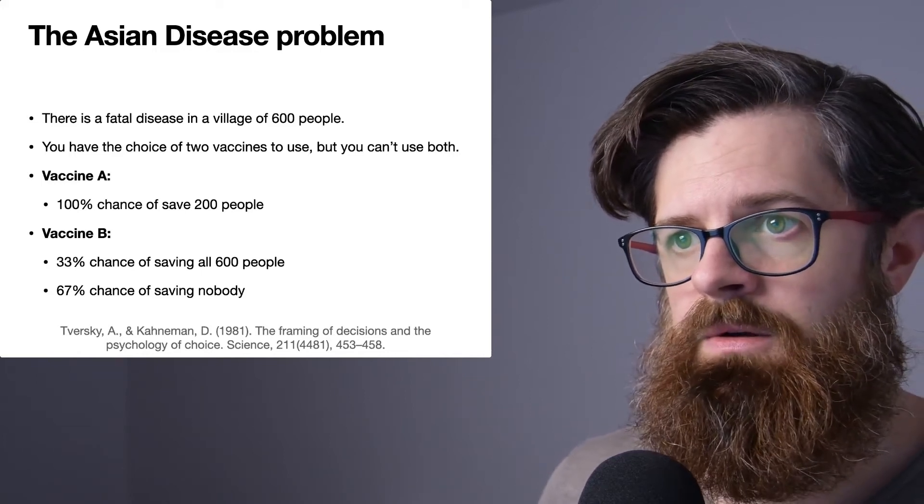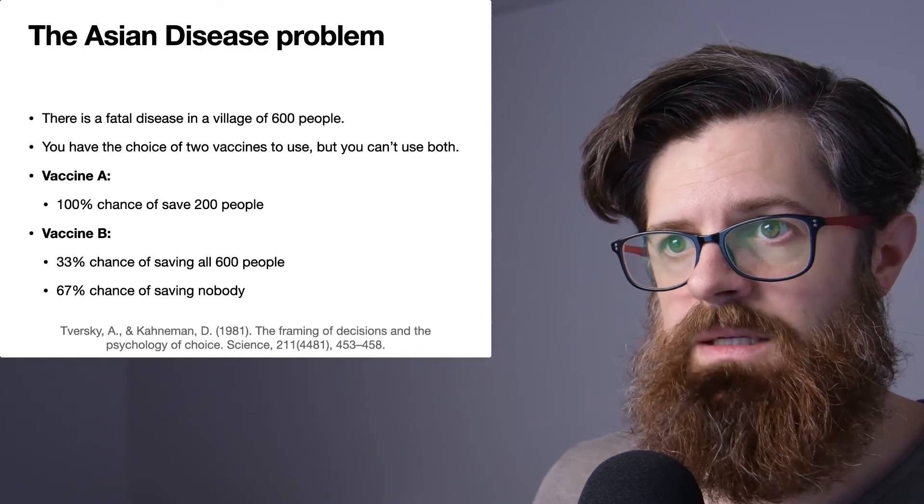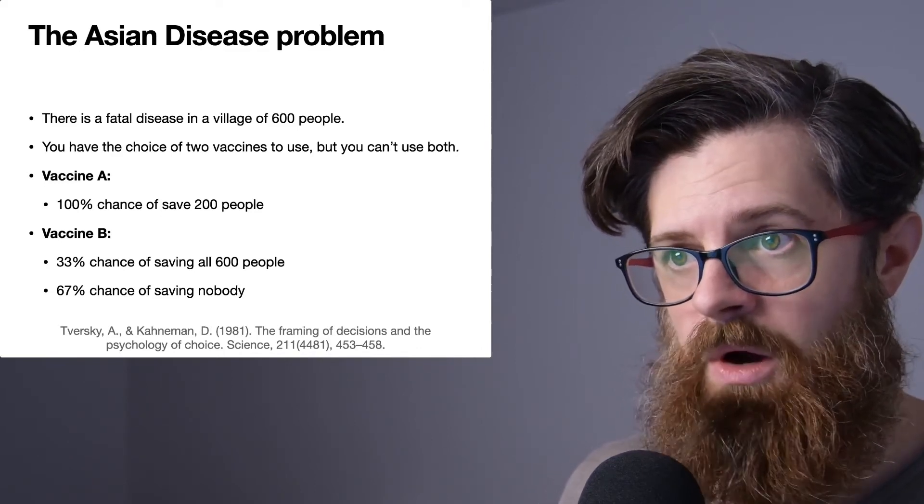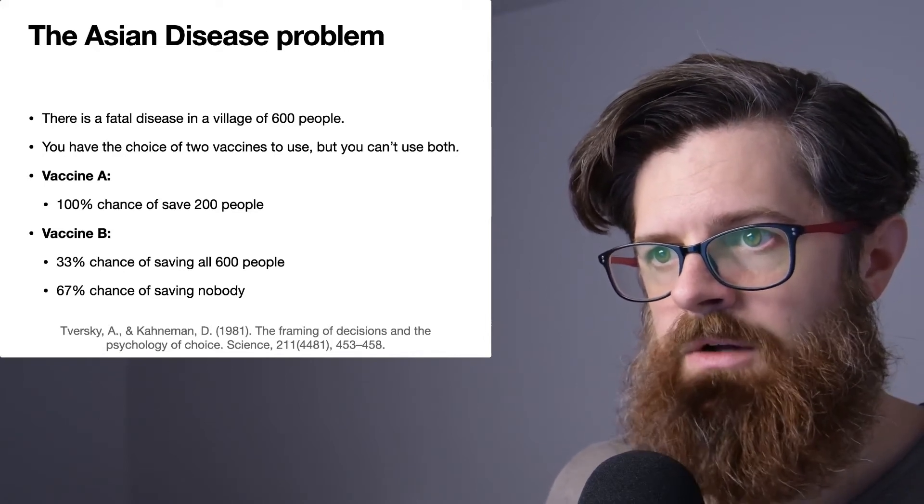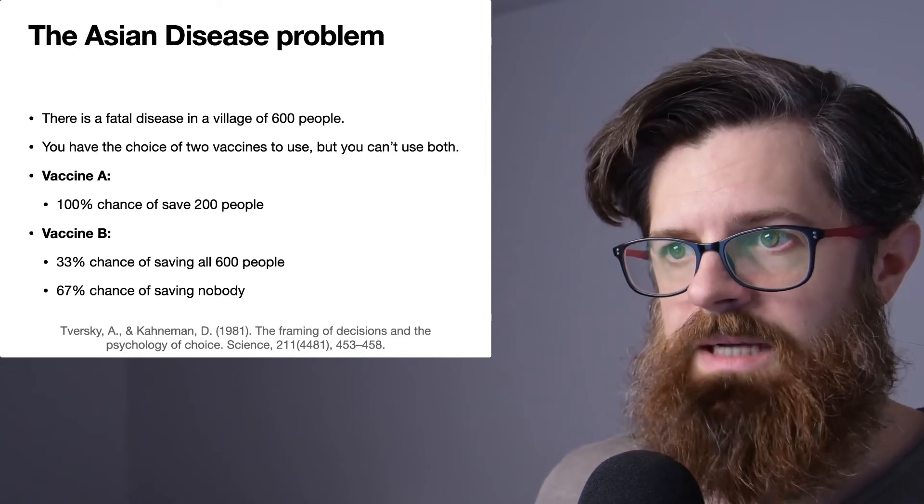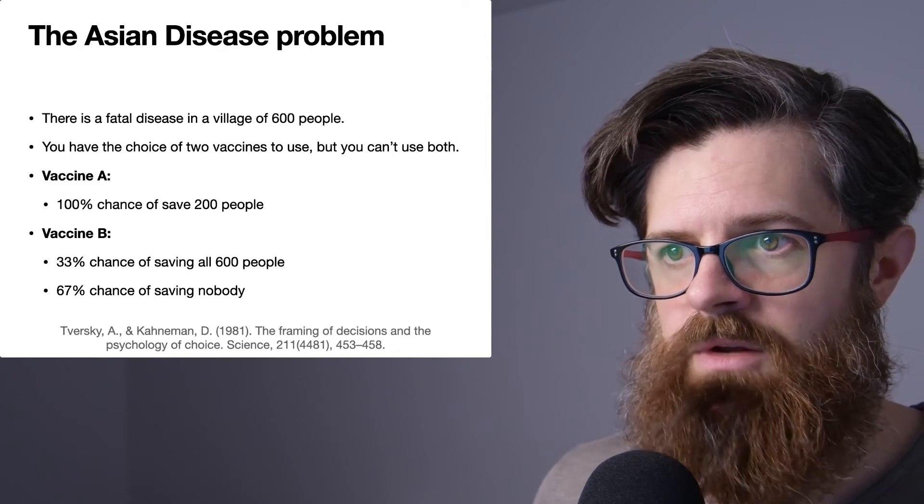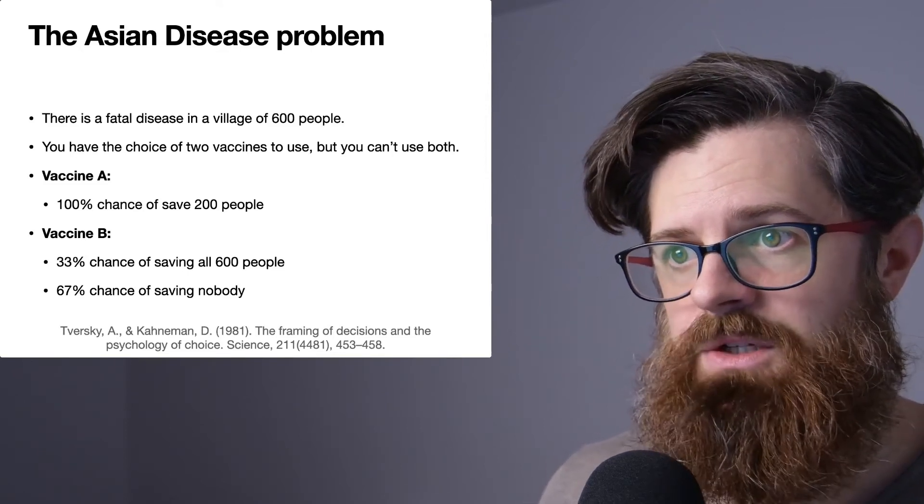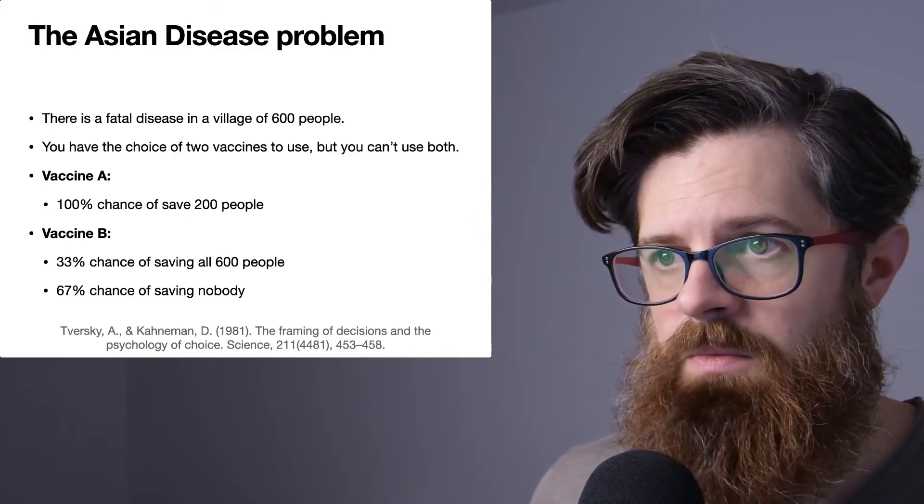You have the choice of using one of two vaccines. You have to use one of the two; you can't use both. Vaccine A has a 100% chance of saving 200 people. Vaccine B has a one-third chance of saving all 600 people, but it also has a two-thirds chance of saving nobody. Before we go on, just have a quick think about which of these two vaccines you would prefer: Vaccine A or Vaccine B.